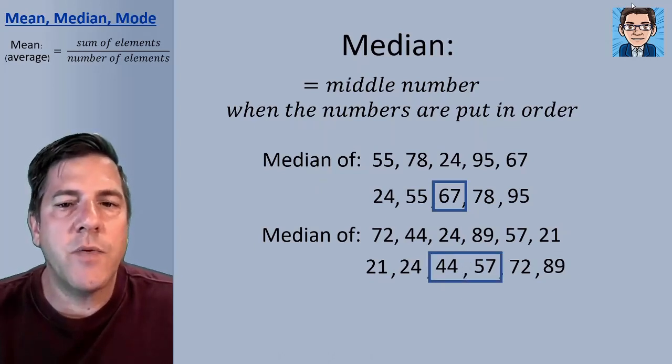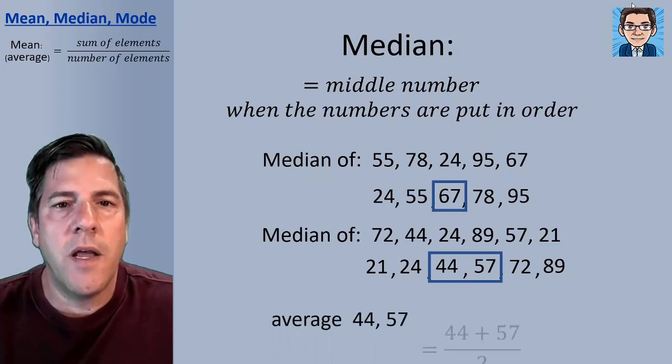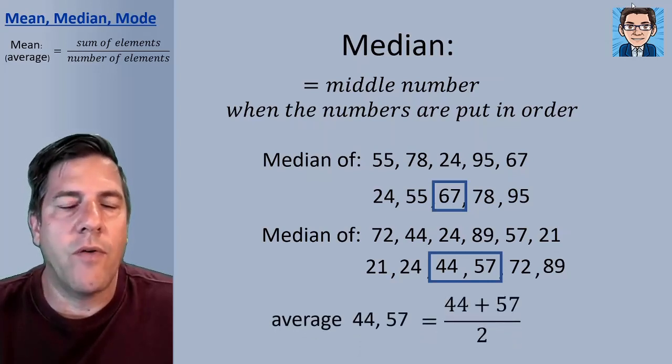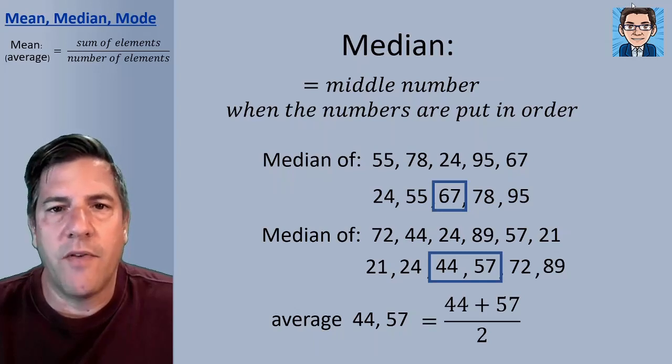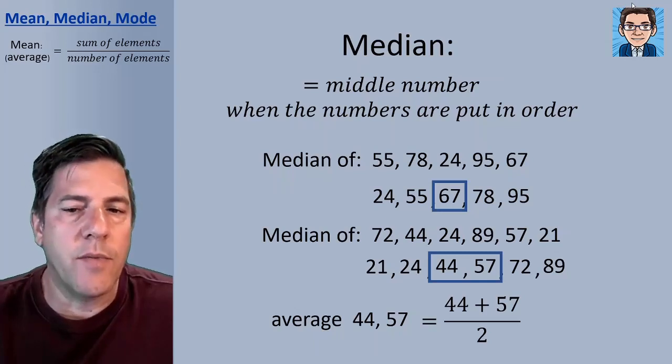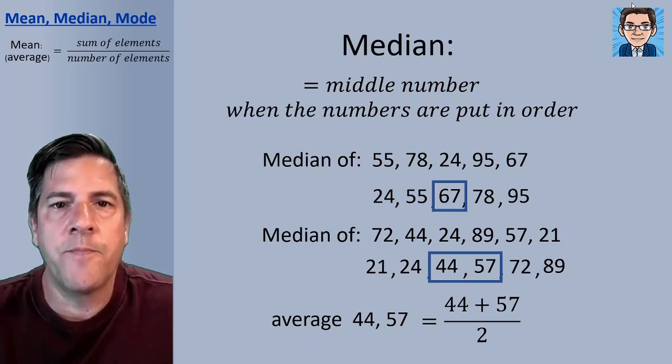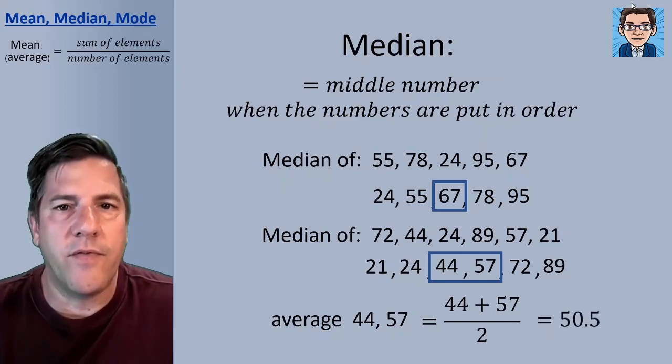So in a case like this, we just have to take those two numbers and then take the average of those two numbers. So we're going to take 44 and 57, add them up and divide by two. That's the number that's halfway in between 44 and 57. And that's going to get us our median of 50.5.